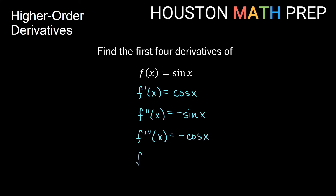Our fourth derivative — written with 4 in parentheses — is the derivative of -cos(x). The derivative of cos is -sin, but we already have a negative out front, so we actually get back to positive sin(x). This gives us a nice pattern: when we start with sin(x) or cos(x) and take derivatives with respect to x, after four derivatives we get back to the function we started with. Hopefully this helps you with higher order derivatives — thanks for watching, we'll see you in the next video.